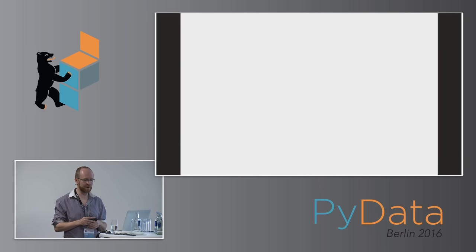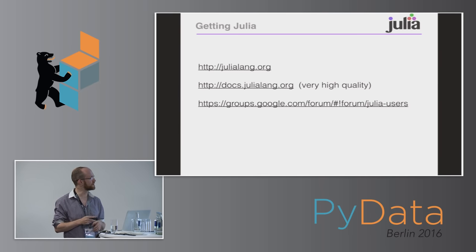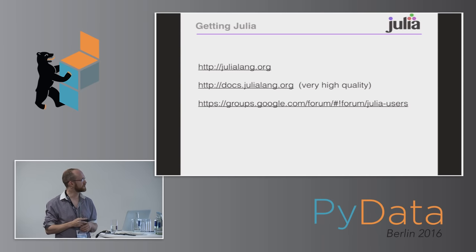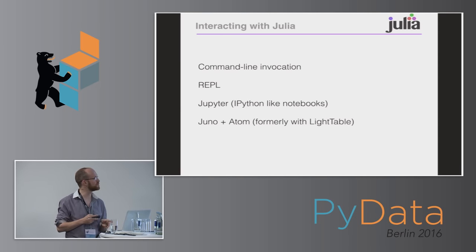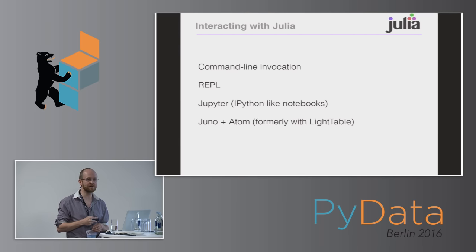You can download Julia from julialang.org. The documentation is all online — a year ago I spent time on the forums complaining about quality, but it's really very good now. The forum is extremely active, on Google Groups — just look for Julia or Julia users. There are four ways of interacting with the language: you can run it on the command line, use a REPL, use an IPython-like notebook (Jupyter Notebooks), or run it in Atom with a plugin called Juno.